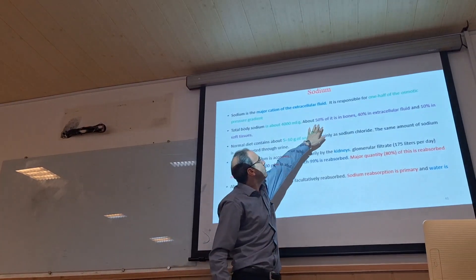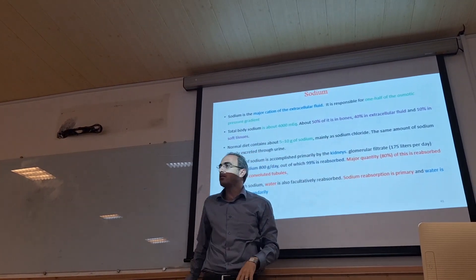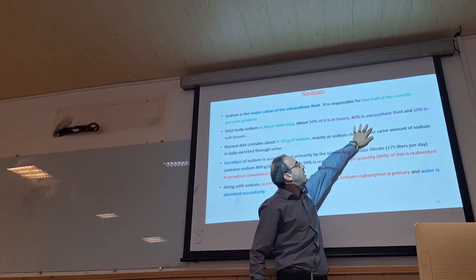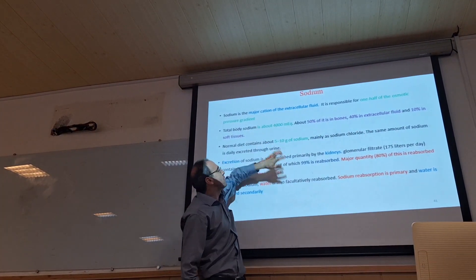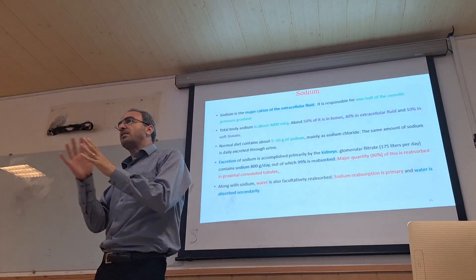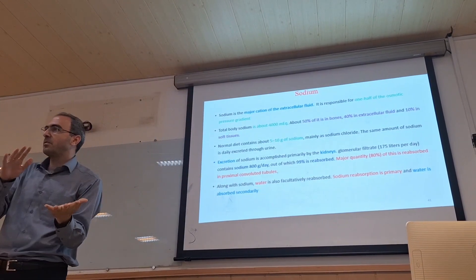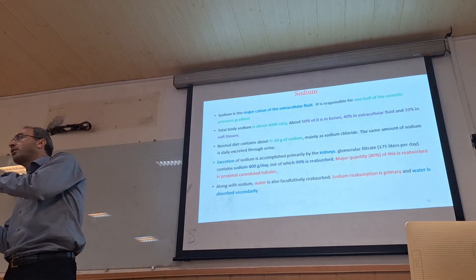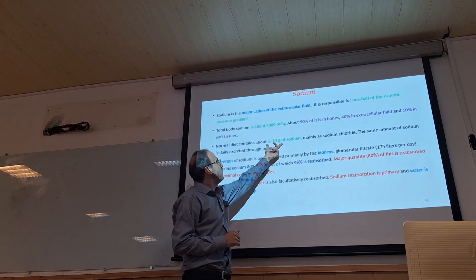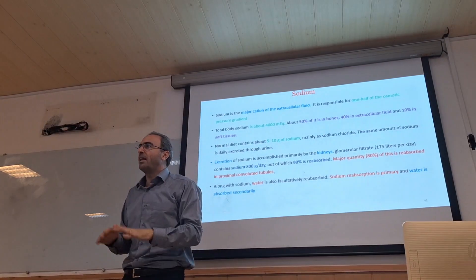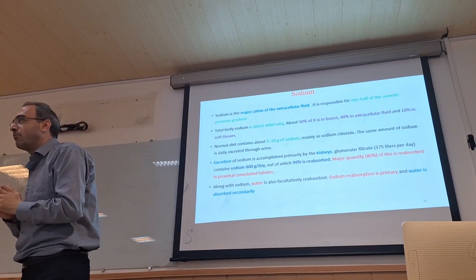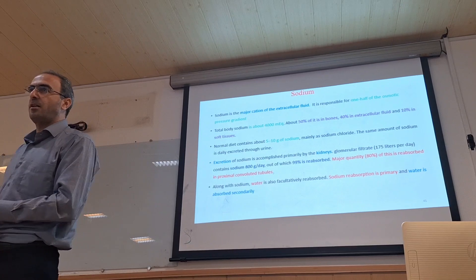About 50 percent of body sodium is located in bone, 40 percent in extracellular fluid, and 10 percent in soft tissue. Near to 70 percent of this amount is exchangeable between extracellular fluid, soft tissue, and bones. Normal diet contains 5 to 10 grams of sodium, which is enough for your sodium level.